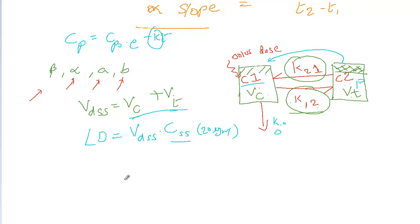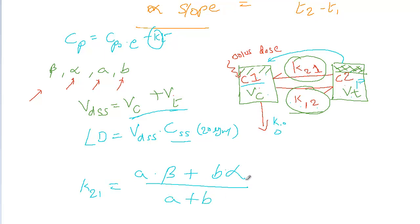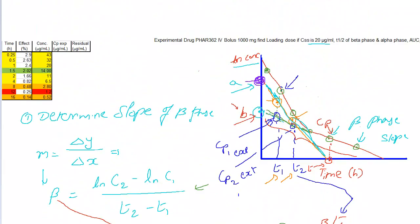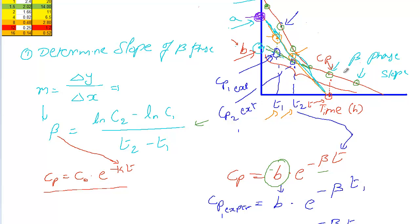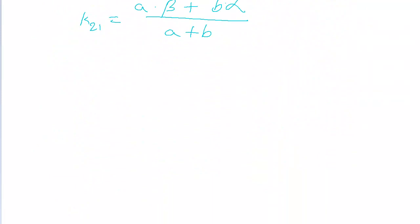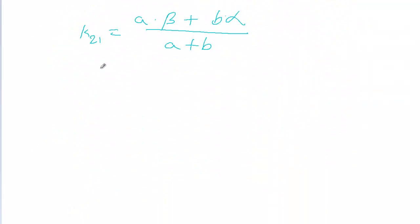To find Vc, we go through a series of equations. The first one is: K2 to 1 equals A times beta plus B times alpha, divided by A plus B. We already determined A, B, the beta slope, and the alpha slope from previous work, so we can now find K2 to 1.